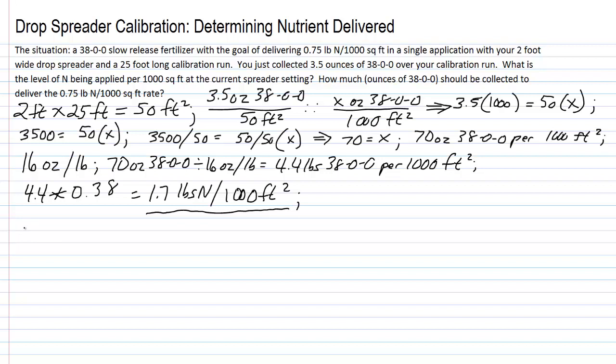What we do is we work with what we've got, and we already have 3.5 ounces of 38-0-0 is giving us what we just calculated here: 1.7 pounds of nitrogen. That's what we just determined was the level in the calibration run corresponds to 1.7 pounds of N per thousand square feet.